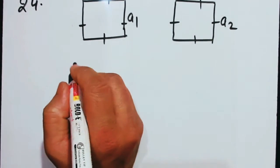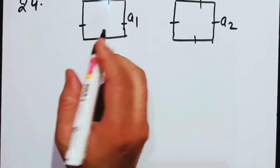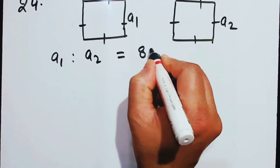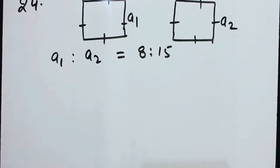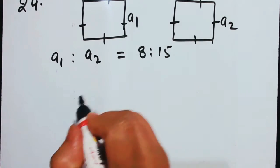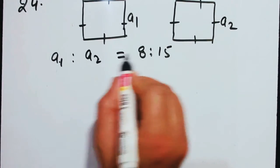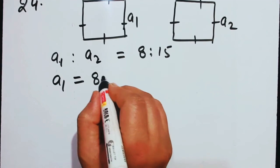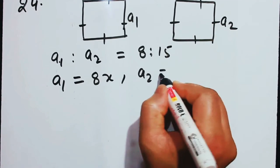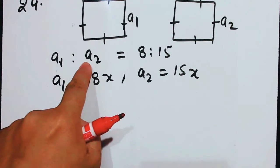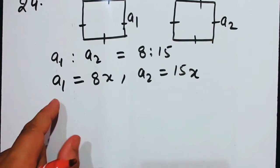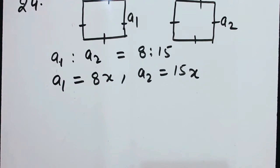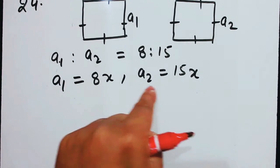Find the ratio between their perimeters. Here A1 equals 8x and A2 equals 15x. You take common factor x when given a ratio.